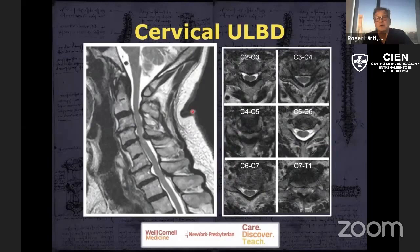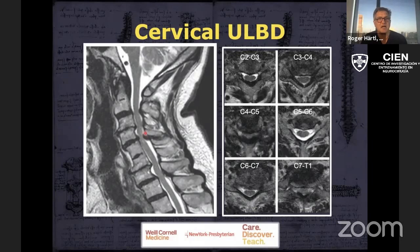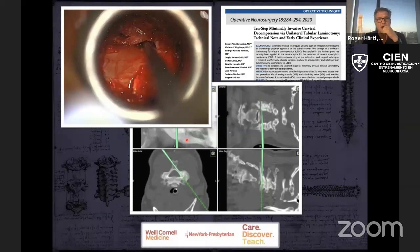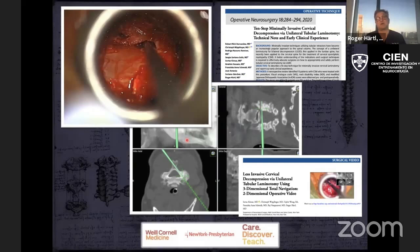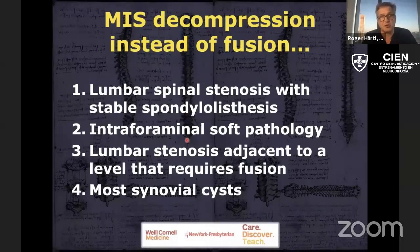You can do this in the cervical spine as well — we do this now routinely for one or two, sometimes even three-level cases where lordosis is still somewhat maintained and patients have ligamentous hypertrophy. We just wrote that up for Operative Neurosurgery with a video. We use navigation for those cases, and also intraoperative monitoring because it's a high-risk area. The navigation is really nice because it helps you orient yourself, especially if you're more at the beginning of your learning curve.